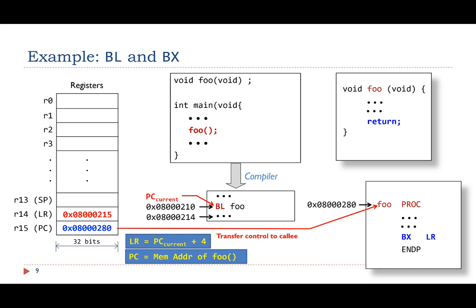Then, the BL instruction sets the PC to 0x800280, which is the memory address of the subroutine foo.